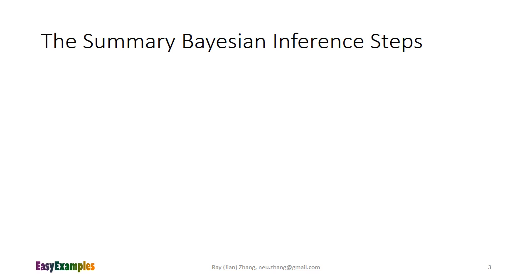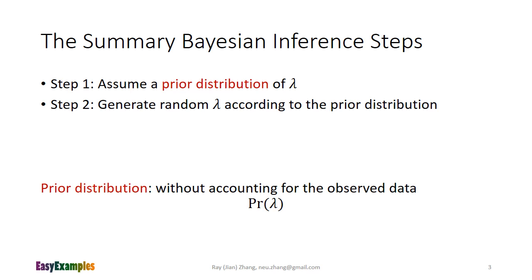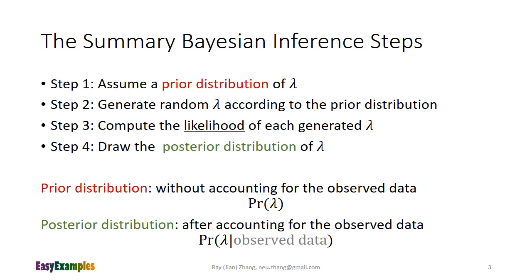Here is a summary of the procedure of Bayesian inference. The steps have been customized for our example question. In step one, we assume a prior distribution of lambda. The prior distribution can be any form guessed by the analyst, and it does not take the observed data into account. In step two, we generate random lambdas according to the prior distribution. In step three, we compute the likelihood of each generated lambda. Finally, we draw the posterior distribution of lambda, which accounts for the observed data. So Bayesian inference is a process of improving the guess distribution of lambda by taking the observed data into consideration.